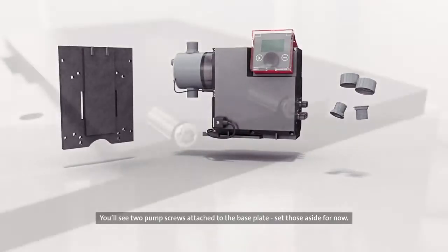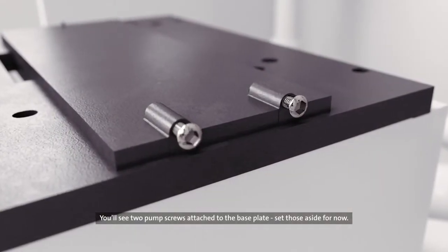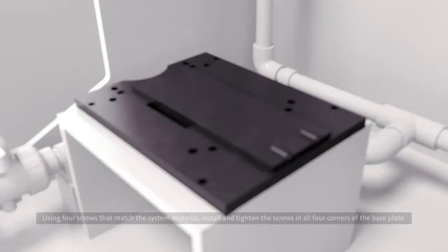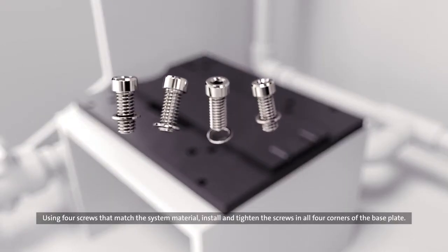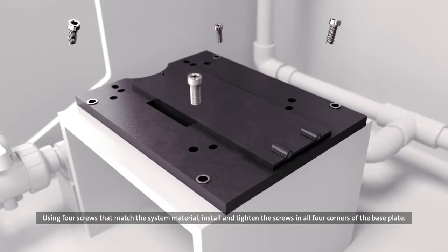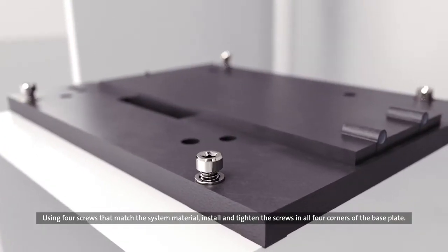You'll see two pump screws attached to the base plate. Set those aside for now. Using four screws that match the system material, install and tighten the screws in all four corners of the base plate.